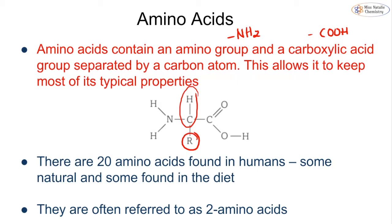There are 20 amino acids that are found in humans. Some are natural and some are found in the diet, and they're often referred to as 2-amino acids or sometimes in literature they're called alpha amino acids.